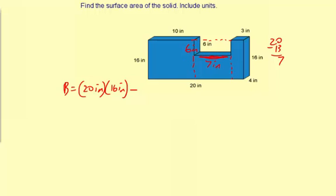So to subtract this small rectangle, it's going to be minus 7 inches times 6 inches. That's going to be the area of the base. So let's figure what that is.